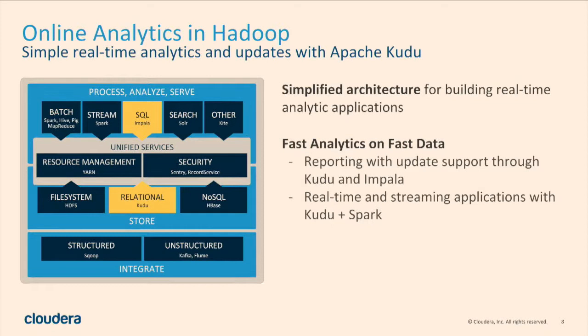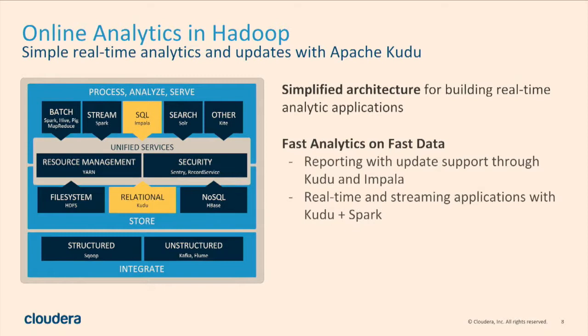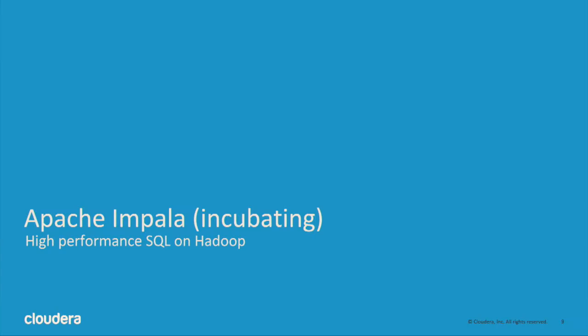Kudu simplifies your architecture and is really good for what we call 'fast analytics on fast data.' Fast analytics means running a BI app, a Spark job, building a machine learning model — anything looking at data in aggregate. Fast data means the data is not a static dataset; it may be streaming updates as they arrive. That's the overview of where Kudu fits and its design goals.